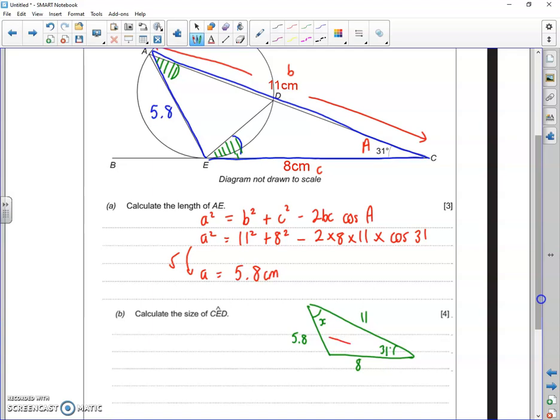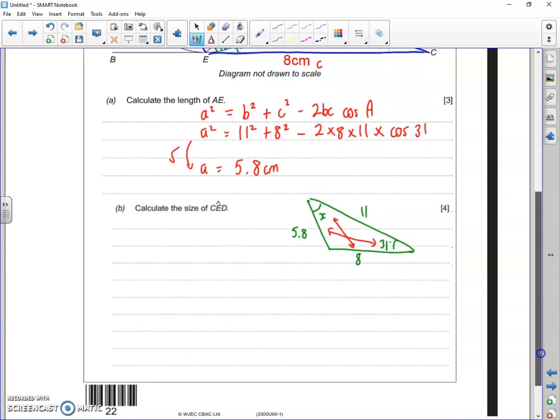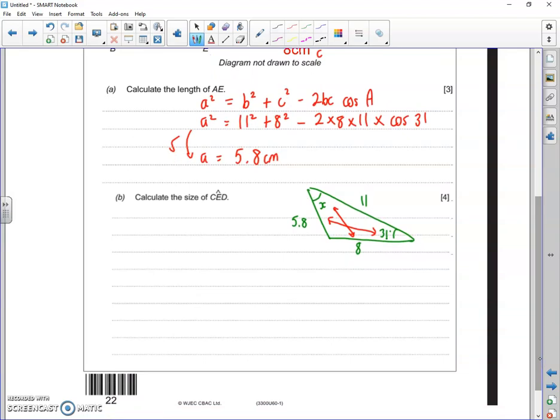And we've got pairs. So the 5.8 makes a pair with the 31, and X makes a pair with the 8. And when you've got pairs, it's going to be the sine rule. So we're finding an angle, so we need angles on the top.